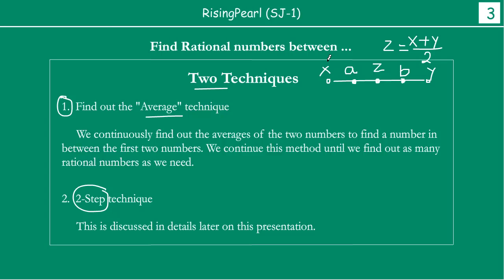In this example, we have two numbers x and y, so we found out z. Then we have three numbers x, z, and y. If we take x and z, we find the number a. Similarly, between z and y, if we take the average, we find out b. We can take as many averages as we want and find out as many rational numbers as we need.